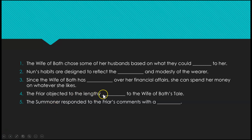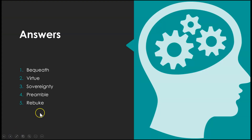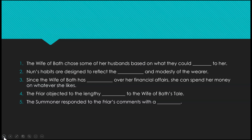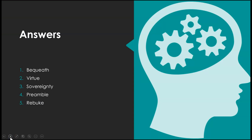Number four: 'The friar objected to the lengthy preamble to the Wife of Bath's tale.' Preamble means the bit that comes before — pre means before — so it refers to the message she gives before she starts telling her tale. Lastly, 'the summoner responded to the friar's comments with a rebuke.' Rebuke means disapproval or criticism — to rebuke means to disapprove of.